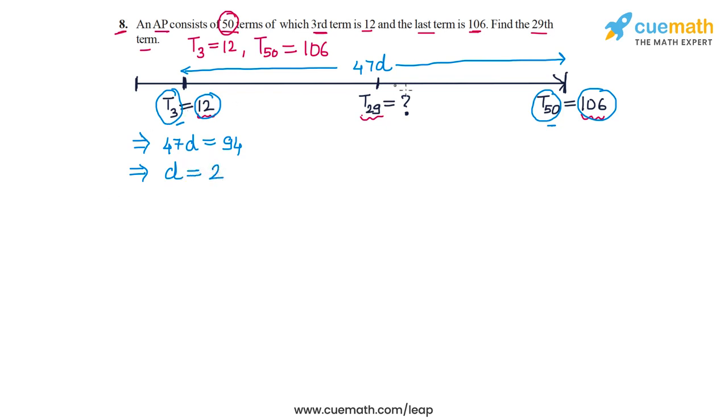Now to find T29, all we have to do is find out how many jumps of D it will take to go from T3 to the 29th term. So 29 minus 3 is 26. So it will take us 26 jumps of D. Now 26D is equal to 26 into 2 or 52. So this means that T29 is equal to the third term 12 plus 26 jumps of D, so 12 plus 52 or 64. So the 29th term is equal to 64.